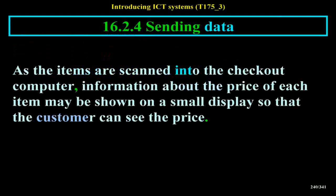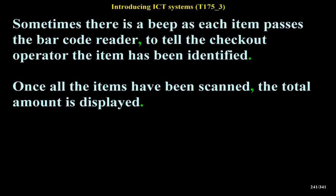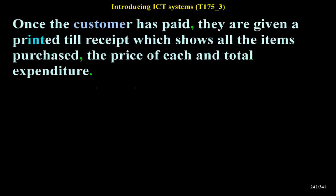Sending Data: As the items are scanned into the checkout computer, information about the price of each item may be shown on a small display so that the customer can see the price. Sometimes there is a beep as each item passes the barcode reader, to tell the checkout operator the item has been identified. Once all the items have been scanned, the total amount is displayed, and once the customer has paid, they are given a printed till receipt showing all items purchased, the price of each and total expenditure.